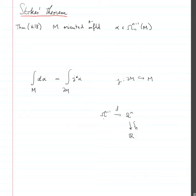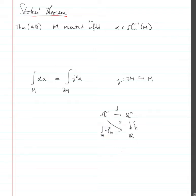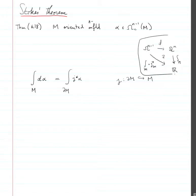What this is telling us is that if you pull back to the boundary and then integrate over the boundary, what we're getting is an equality like this, so that this diagram commutes. This is a kind of picture of Stokes' theorem.